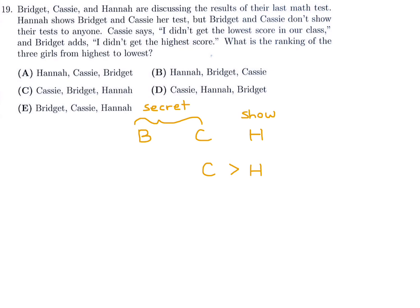Then Bridget, she looks at Hannah's score and says, I didn't get the highest score. Why did she say that? Because obviously, Hannah's score must have been higher. So that means Hannah's score is higher than Bridget's. So if you put these two inequalities together, you get the following. You get Cassie has a higher score than Hannah, but Hannah has a higher score than Bridget. So if you were to rank them from highest to lowest, highest is Cassie, then Hannah, and then Bridget. So Cassie, Hannah, Bridget is the ranking from highest to lowest. And of the answer choices, that would be choice D.